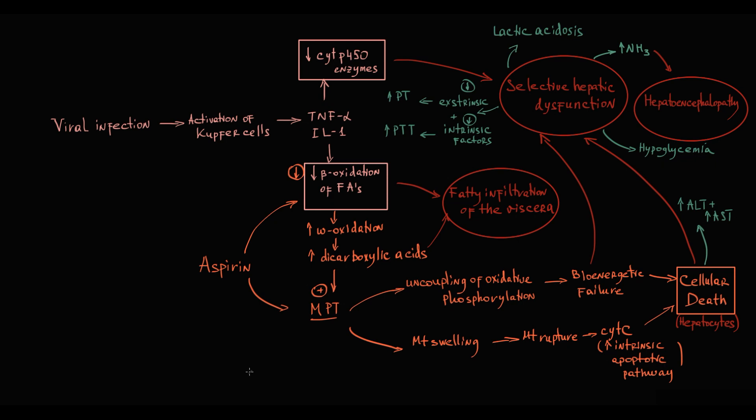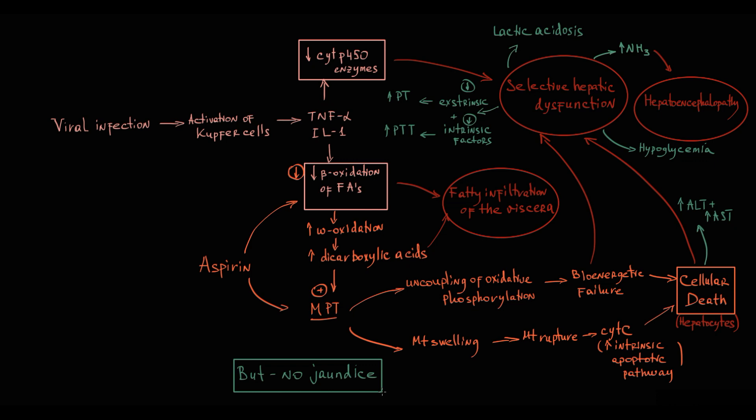Interestingly, in children with Reye syndrome, jaundice does not develop. This is one of the most important diagnostic features. Bilirubin level increases but not to levels that manifest as jaundice. Jaundice becomes evident when bilirubin level becomes greater than 2.5 to 3 mg per deciliter or 40 to 50 micromole per liter. In Reye syndrome, bilirubin does not exceed these values.